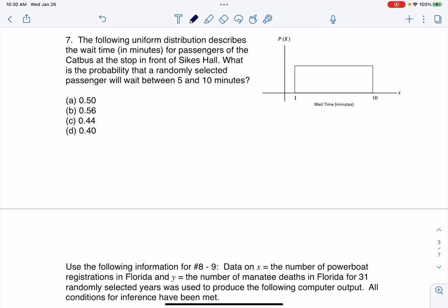Hey everyone, let's look at our next multiple choice question. So we have the following uniform distribution describes the wait time in minutes for passengers of the cat bus at the stop in front of Sykes Hall. Lots of fun information in there, but buzzwords I'm seeing are uniform distribution.